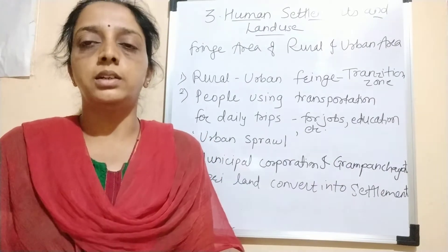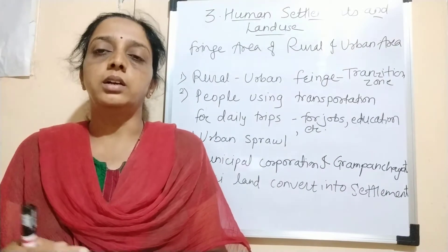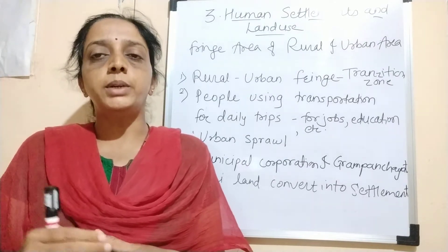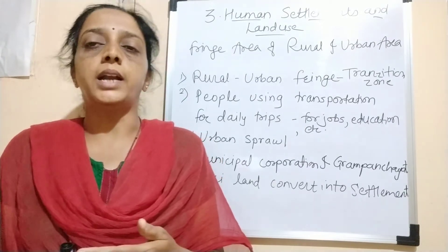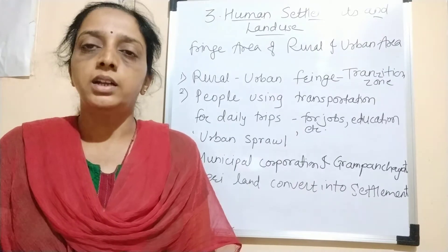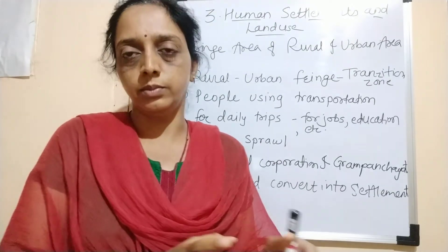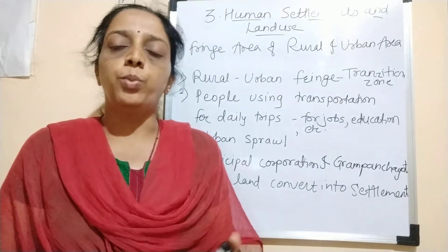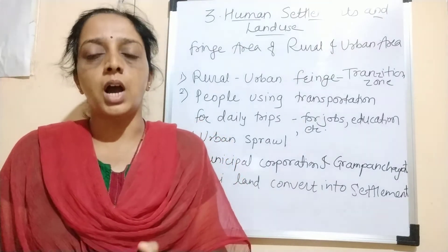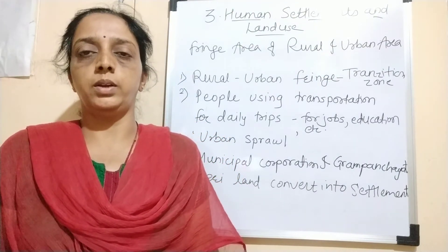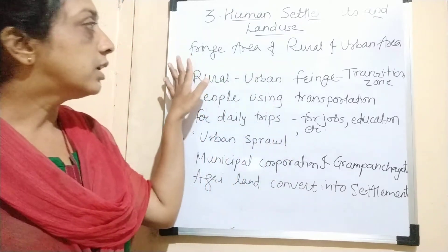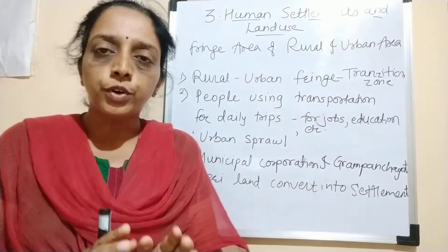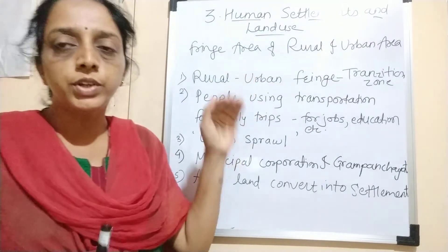In this region, agricultural land is converted into settlements. Because the demand for housing is increasing, the government brings agricultural land under settlement use and gives it for construction purposes. This way people can afford houses and settle in these fringe areas. These are the key characteristics of fringe areas — the region between rural and urban areas.